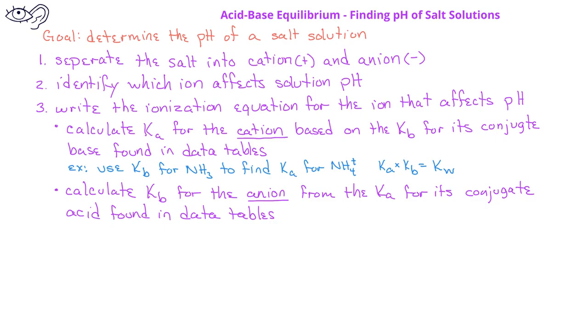So for example, we can use the Ka for hypochlorous acid, HOCl, to find the Kb for the hypochlorite ion if the hypochlorite ion is the one that affects pH.